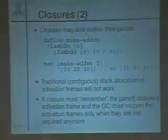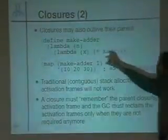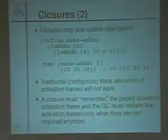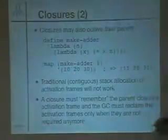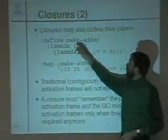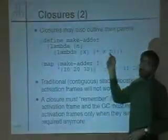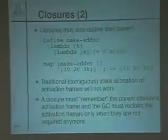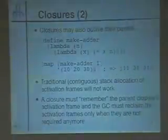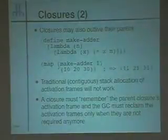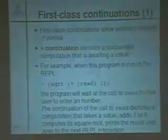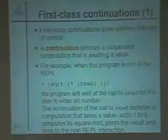So we can't use a traditional stack allocation for stack frames, for activation frames, because the traditional implementation is that when the function returns, the activation frame is reclaimed. And if we do that, then the activation frame that contains n will be reclaimed when makeAdder returns, and then there's no way to actually get to the value of n. So the closure has to remember somehow the parent activation frame, and it's up to the GC, the garbage collector, to reclaim activation frames when they're no longer needed.